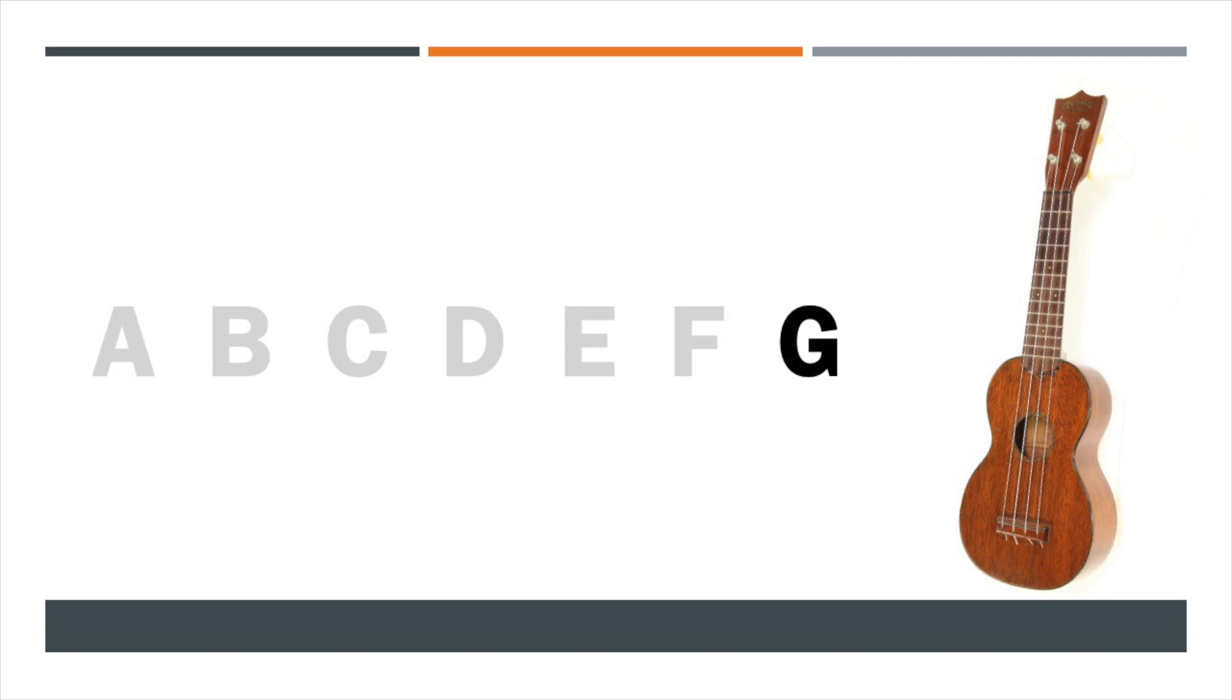So these notes played on the ukulele would sound like this: A, B, C, D, E, F, G.